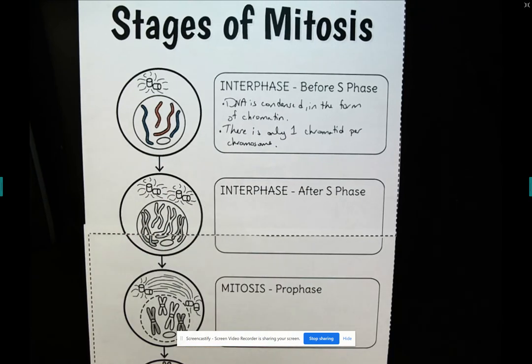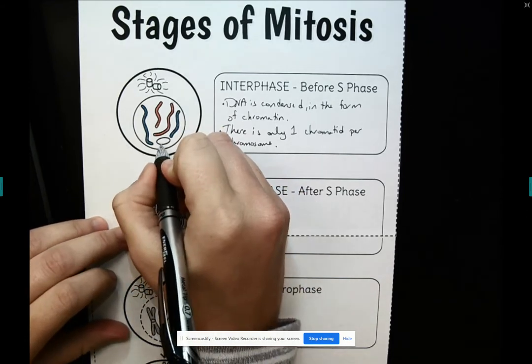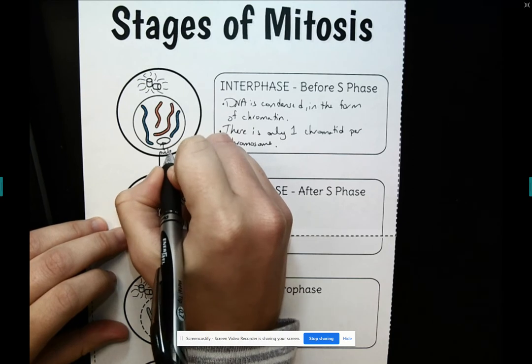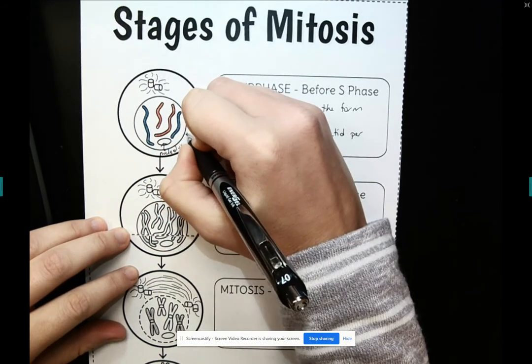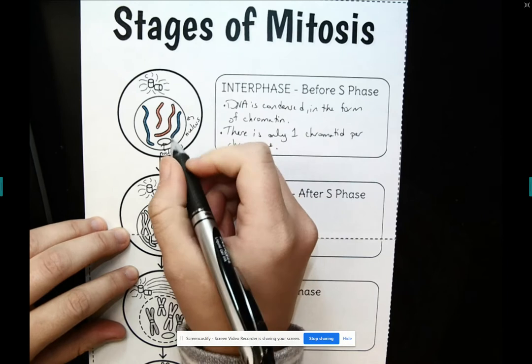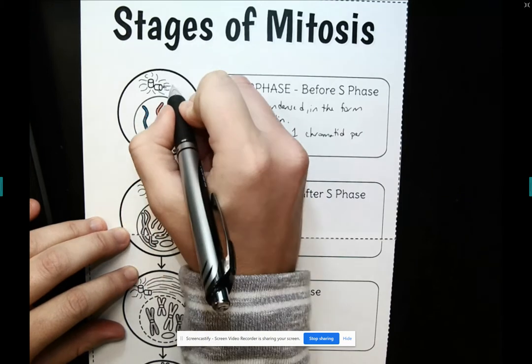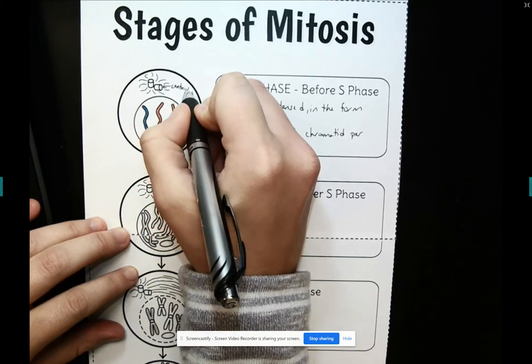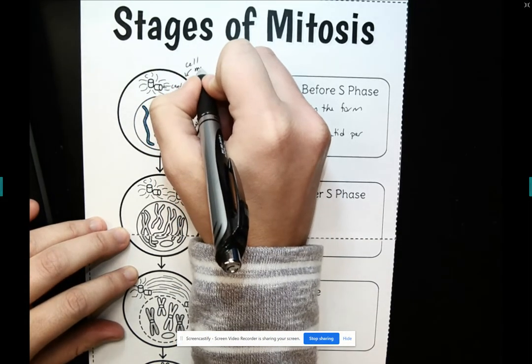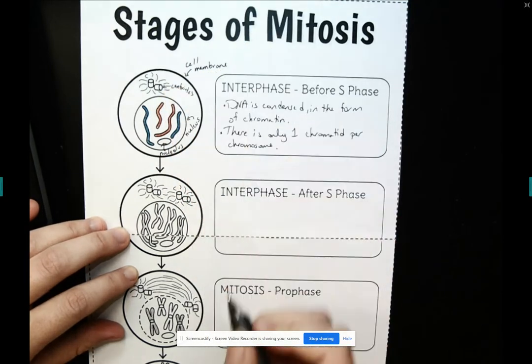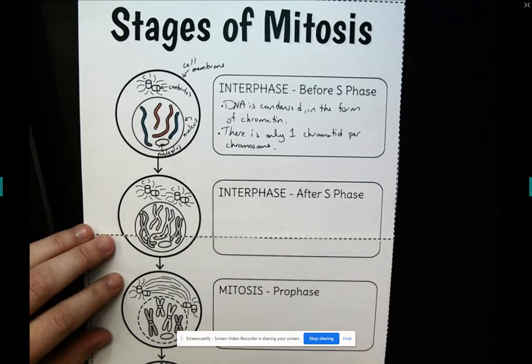And then I want to label a couple things just to make sure we all know what it is we're looking at. So this guy right here, nucleolus, and then we've got the nucleus, and then we've got our centrioles, right? And then you've got the entire cell. So this is our cell membrane. So perfect. Now we've labeled everything.